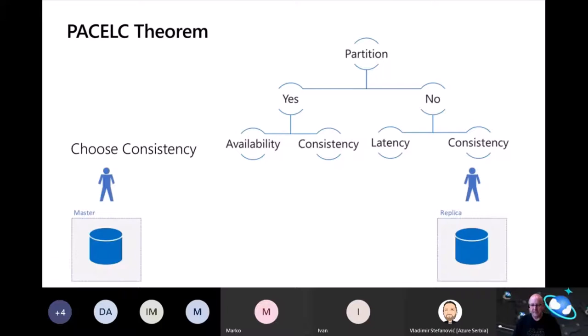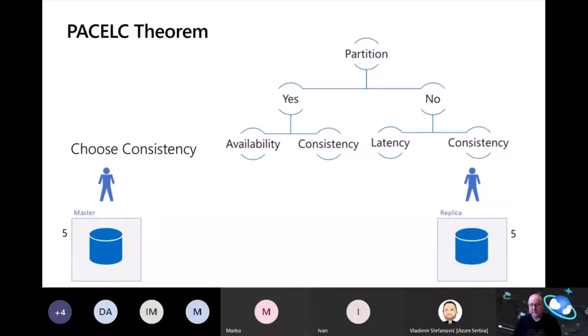On the left side I have CAP theorem describing the choice during a network partition, and on the right side is what PACLC adds: even when the system is working normally, I still have to choose between latency and consistency. Choosing consistency: I write five, replicate five, commit in the replica, and acknowledge back. This illustrates giving up latency, because to be globally consistent I have to commit locally, replicate it, commit it, and then acknowledge back — sacrificing latency because I have to commit the data everywhere in the system.